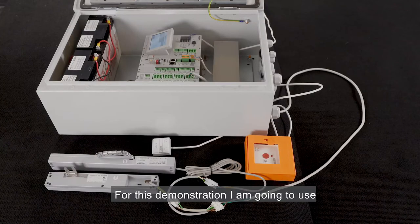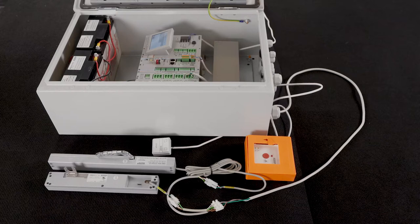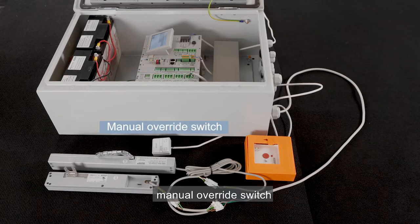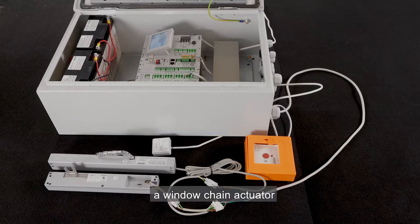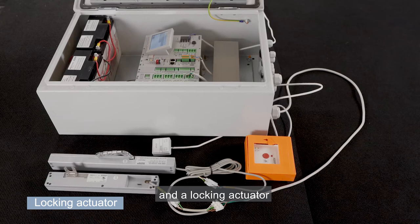For this demonstration I'm going to use the FlexiSmoke panel, a break glass unit, manual override switch, a window chain actuator, and a locking actuator.